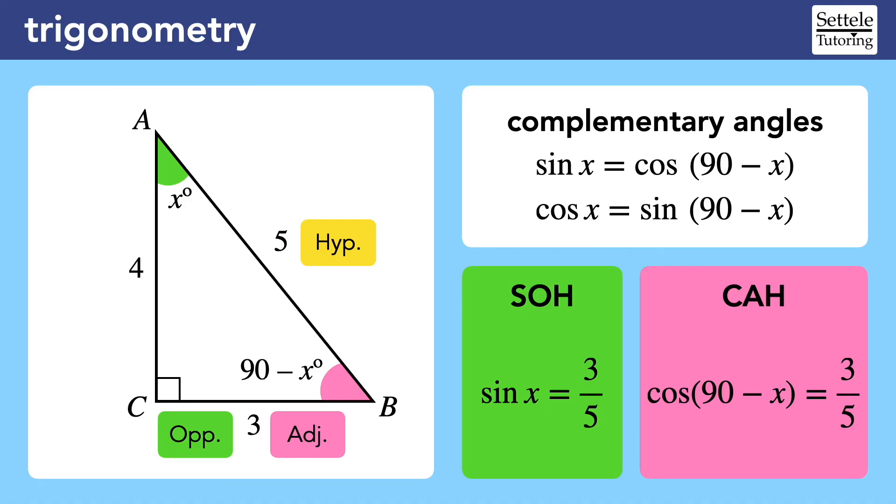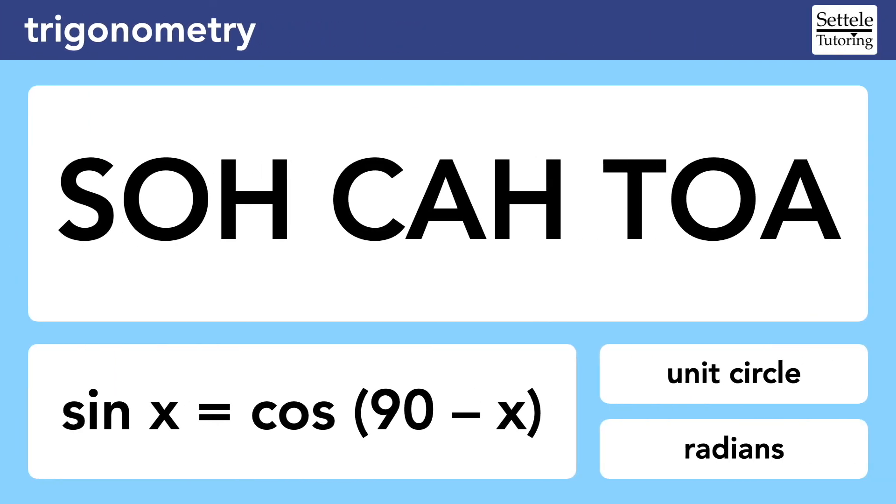You can derive this formula on the SAT by simply drawing a picture on your scratch paper, but it's often faster to solve by memorizing the formula. Even still, the complementary angle formulas are a low priority. Remember that almost every trigonometry question on the SAT will involve SOH CAH TOA in some way.